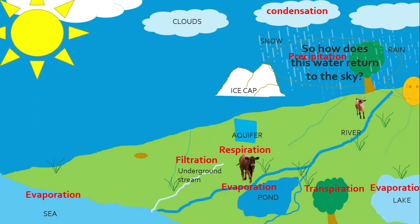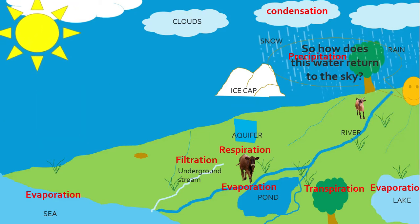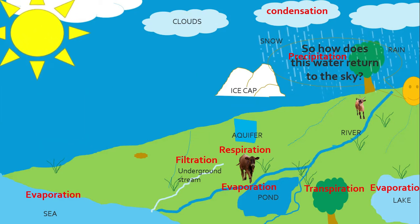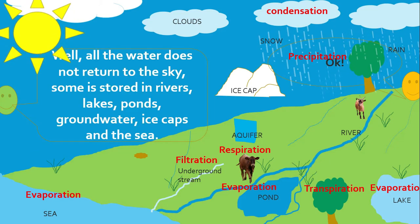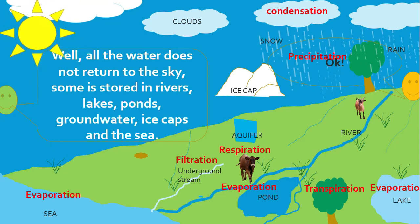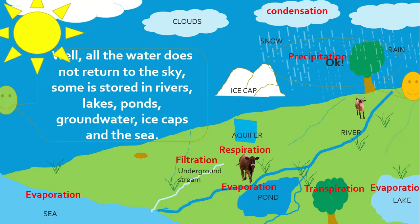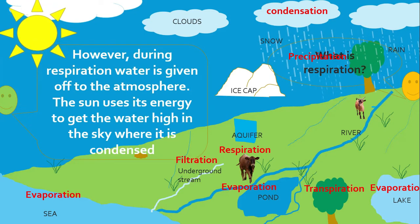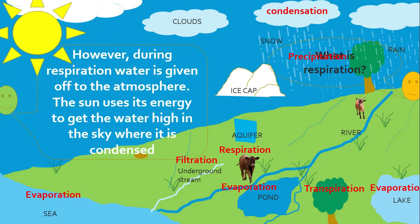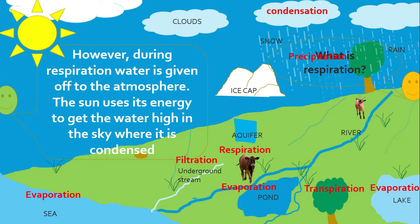We sure do. So, how does this water return to the sky? Well, all water does not return to the sky. Some is stored in rivers, lakes, ponds, groundwater, ice caps, and the sea. However, during respiration, water is given off to the atmosphere.